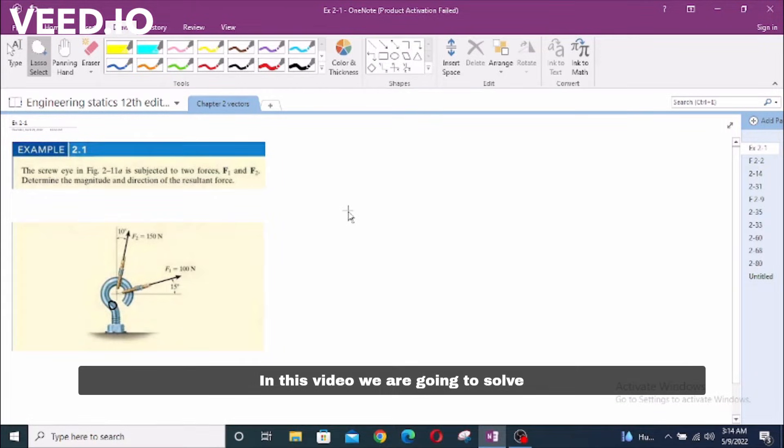In this video, we are going to solve example problem 2.1 from RC Hibbeler Engineering Statics 12th edition. The problem says that screw I in figure 2-11a is subjected to two forces F1 and F2, determine the magnitude and direction of the resultant force.